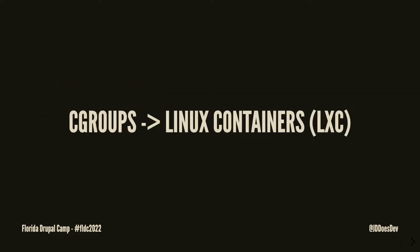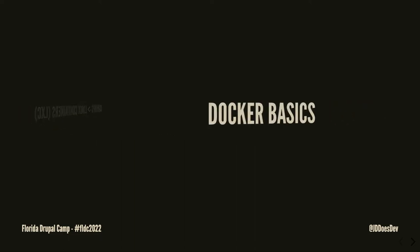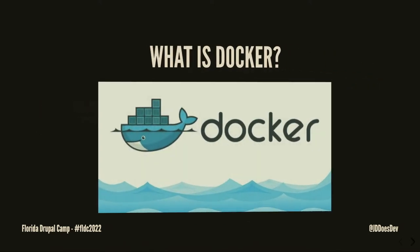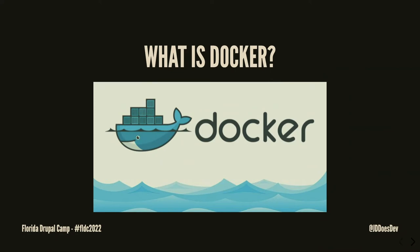C groups clear the path for Linux containers by creating virtual environments. With all those namespaces, they contain everything separately from other namespaces on a system. Now we're going to get into Docker basics. What is Docker? In short, Docker provides an environment and workflow for Linux containers.